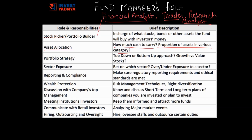Fund managers also decide on the overall portfolio strategy they will adopt for stock picking. They may adopt a top-down or bottom-up approach, or sometimes both. In the top-down approach, the fund manager looks at the overall economy and zeroes in on sectors and stocks that can benefit from prevailing scenarios. In the bottom-up approach, the fund manager focuses on the fundamentals of the company irrespective of the overall economic situation. The fund manager may also decide which stocks to pick — growth or value. Growth stocks have high growth potential but are currently highly valued, whereas value stocks are available cheap relative to their actual potential.